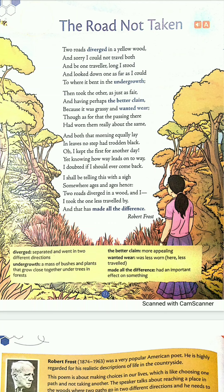In the first stanza the poet says that in the woods there were two roads. While he was travelling, both roads diverged — they were separated and went in two different directions. The poet has used 'yellow wood,' meaning the leaves were yellow. Maybe it was autumn season, that's why the leaves had turned yellow, depicting the autumn season.